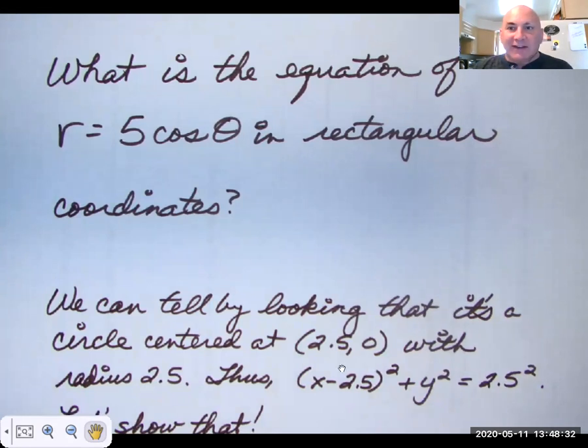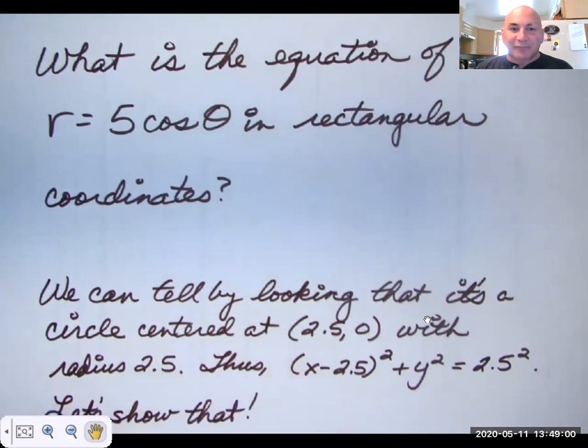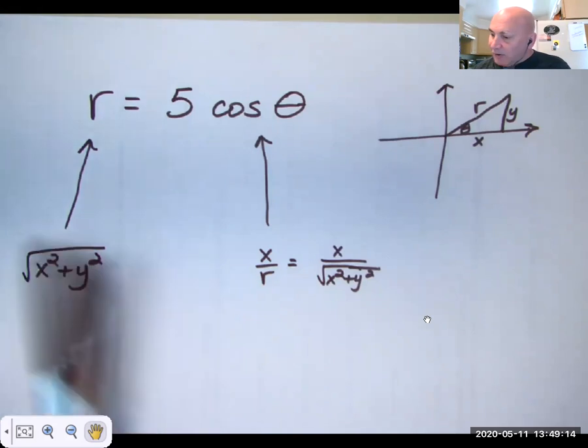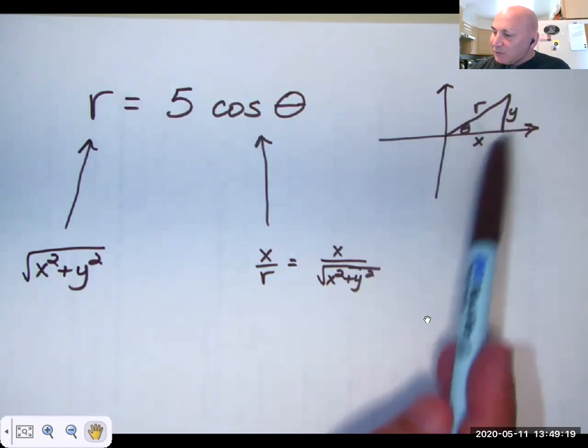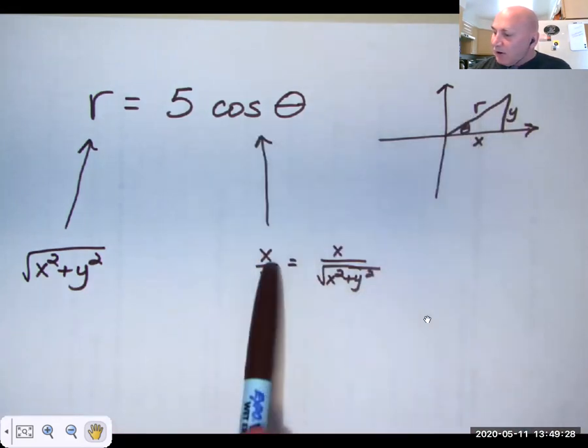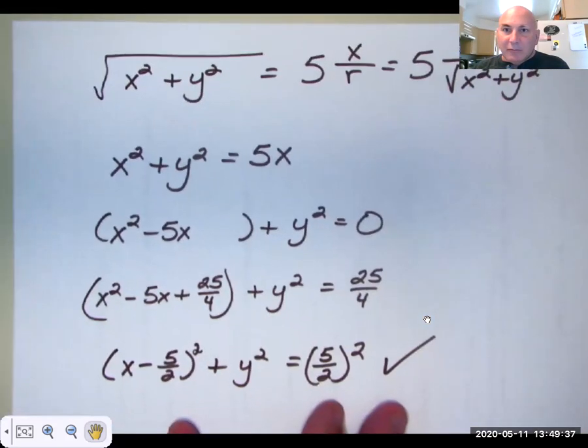So I already asked you, what is the equation of that circle? Five cosine theta in rectangular coordinates. Well, you could tell it was centered on the x-axis at the point two and a half zero. And it went from the diameter went from zero over here to five over here. So zero to five. That means it was halfway across two and a half zeros the center. And it has a radius of two and a half. So here's x minus the two and a half. Here's y minus the zero. So x squared plus y squared equals r squared. The equation was r equals five cosine theta. So r is, since x squared plus y squared is equal to r squared, r is the square root of x squared plus y squared. Cosine theta is x over r, which is x over this radical.